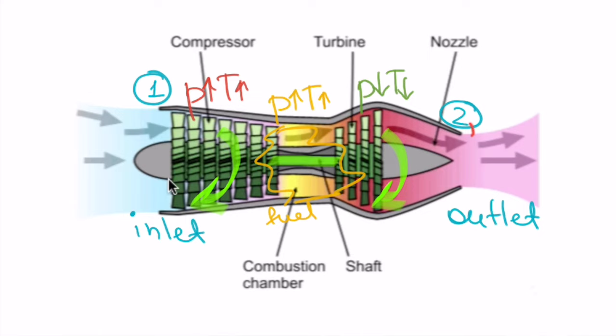And finally the air goes into a nozzle and you see that the nozzle has a small area for the outlet or the exit and this is essential to generate the thrust.